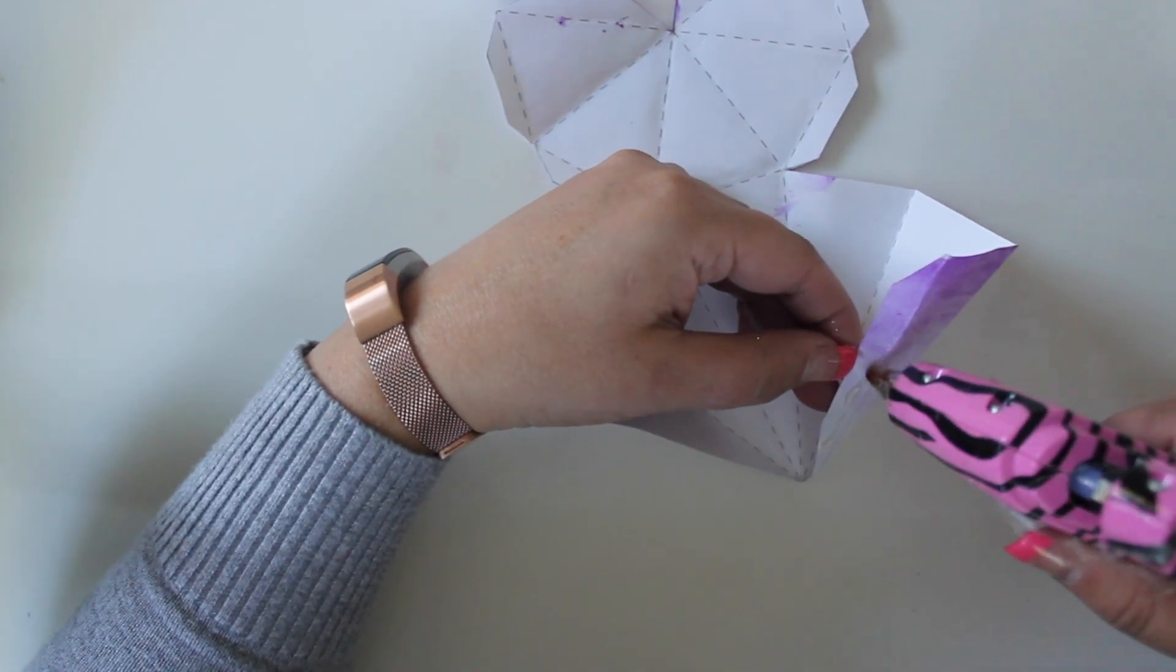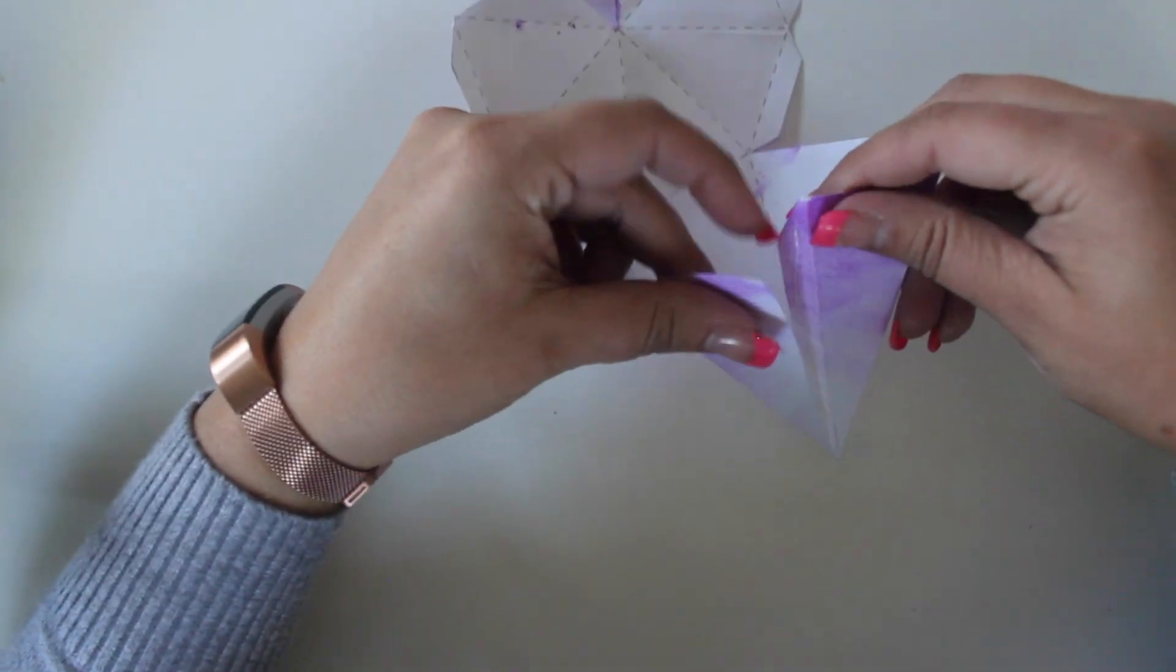Hot glue the gem together by adding a thin line of hot glue along the flaps and pressing the edges together.